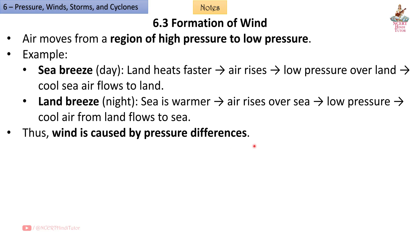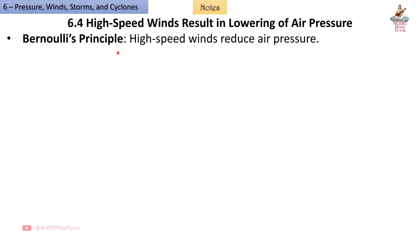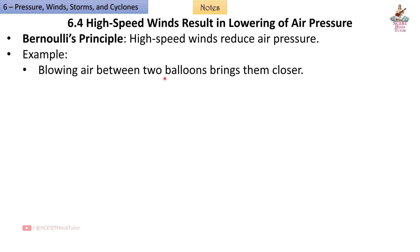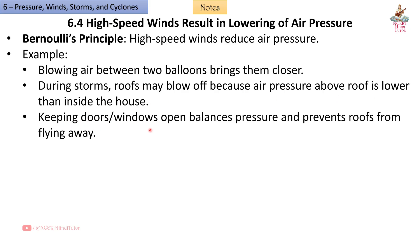6.4 High speed winds result in lowering of air pressure — Bernoulli's principle. High speed winds reduce air pressure. Example: Blowing air between two balloons brings them closer. During storms, roofs may blow off because air pressure above the roof is lower than inside the house. Keeping doors open balances pressure and prevents roofs from flying away.